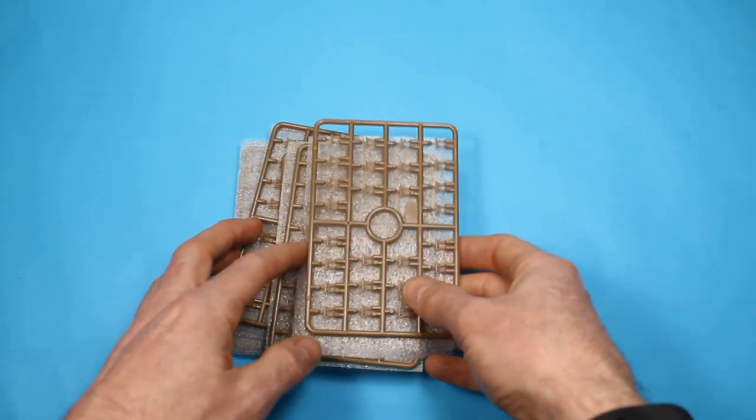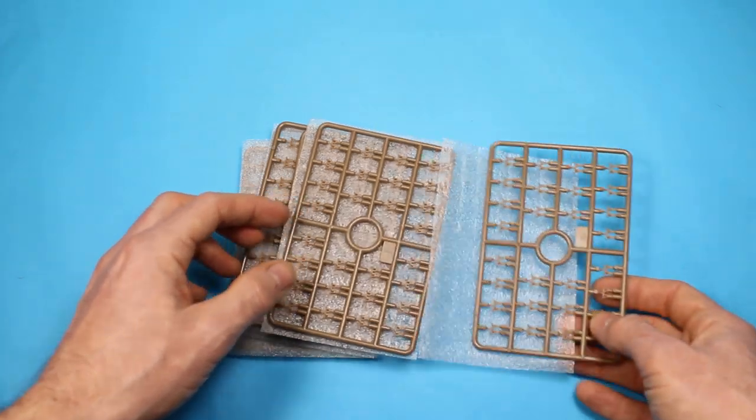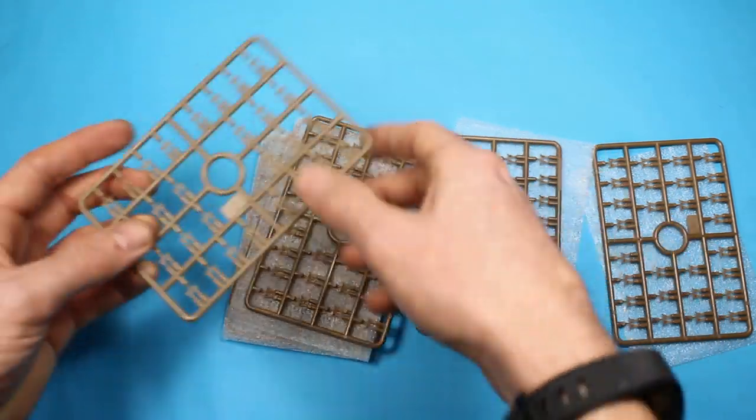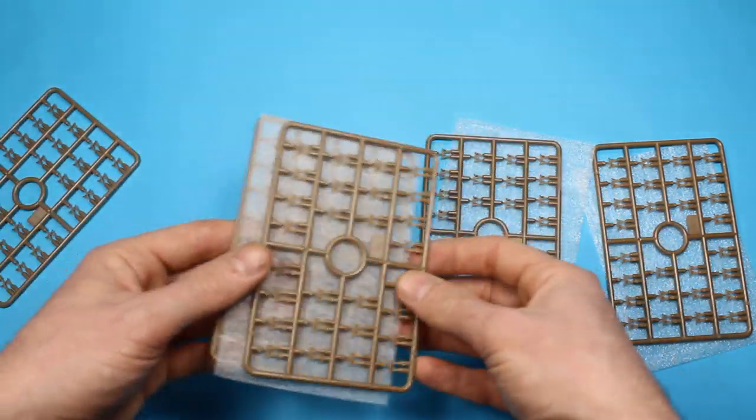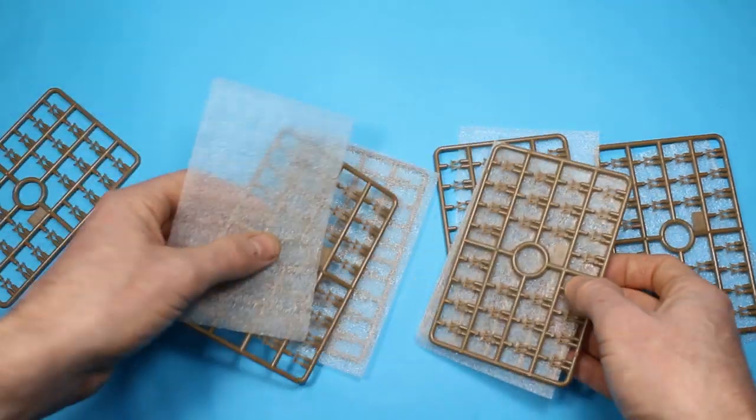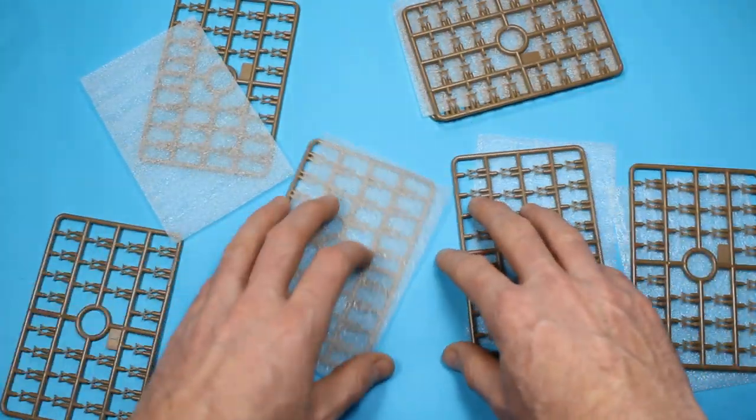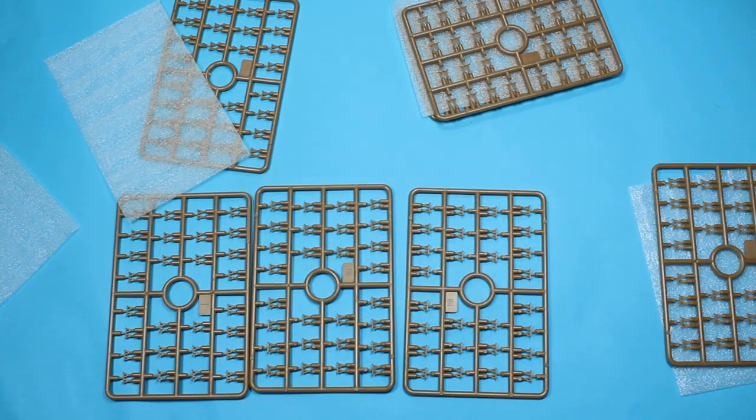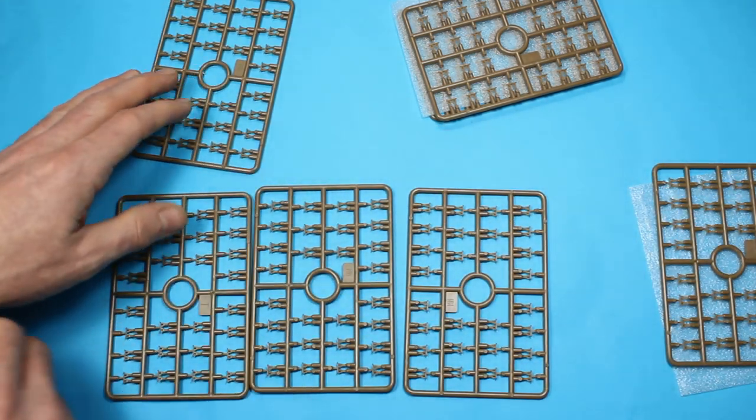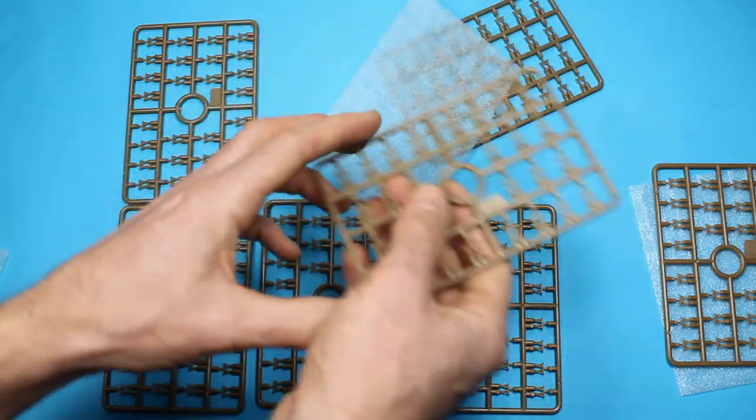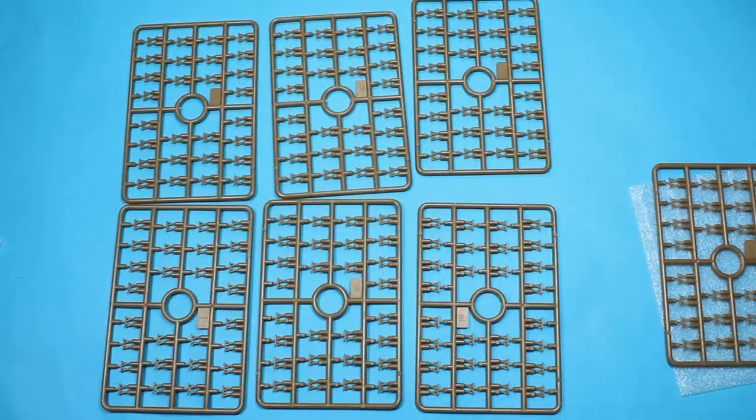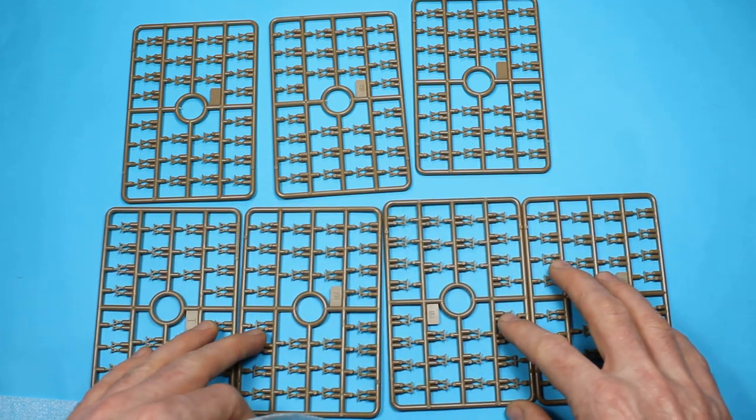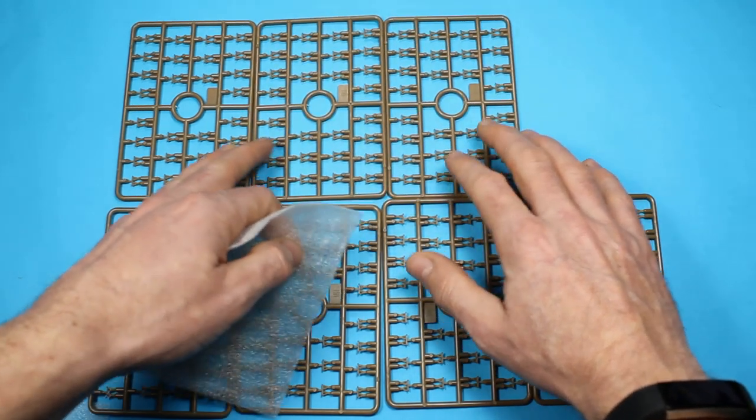Lastly for the sprues, we've got the tracks. Each one's got a section of foam separating it to prevent damage. The tracks are individual links. As many people want individual link tracks as want rubber tracks. I'm glad to see these, though it is a bit of a tedious task. It's four and a half sprues for each side.